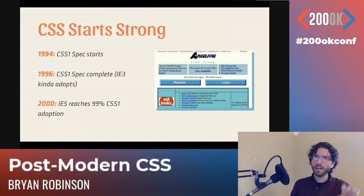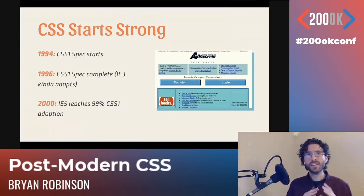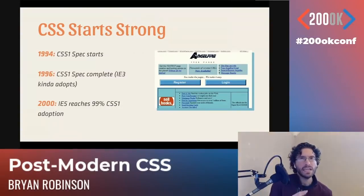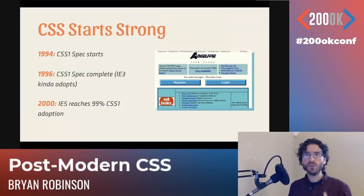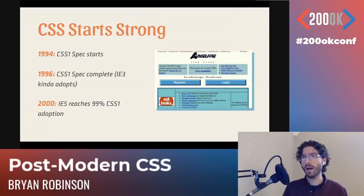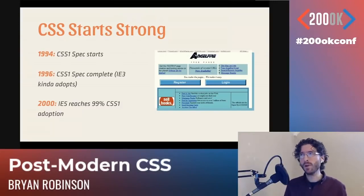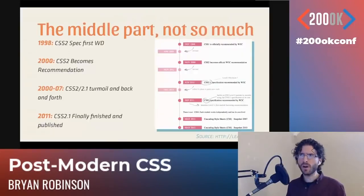In 1994 they started working on the spec. In 1996 the CSS1 specification was complete. By that point IE3 kind of adopted it, and by 2000, 99% of that specification was in IE5, which was probably the most prominent web browser of the time. So about six years from start to finish, and it was all implemented with very few bugs — nothing to worry about. We started out strong.